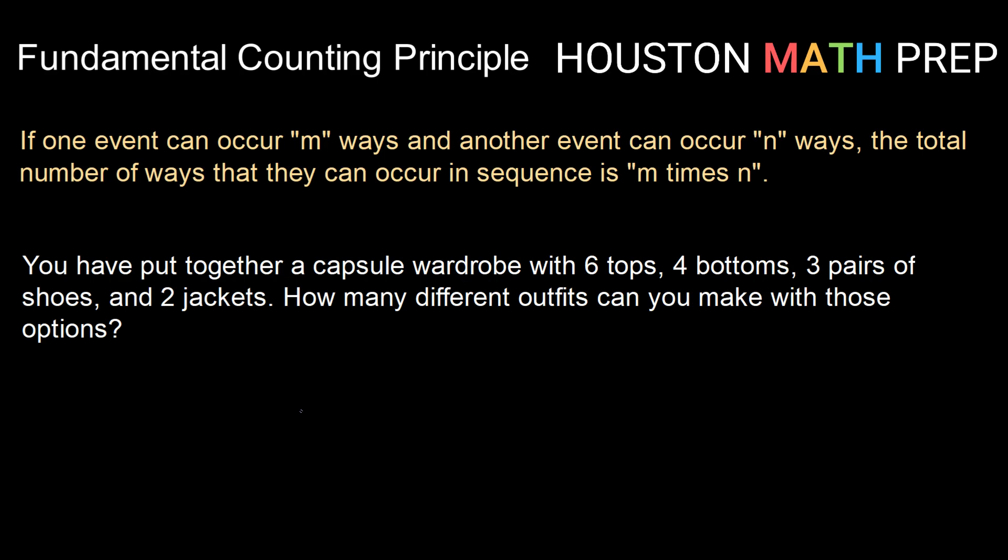A very classic example of the fundamental counting principle is putting together outfits given different pieces of clothing. Let's say you've put together a capsule wardrobe, which means everything in the wardrobe matches with everything else. You have six tops to choose from, four pairs of bottoms, three pairs of shoes, and two jackets. We want to know how many different outfits you can make — an outfit consisting of one top, one bottom, one pair of shoes, and one jacket.